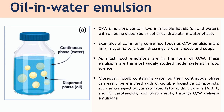Now let's see what is oil-in-water emulsion. Oil-in-water emulsions contain two immiscible liquids with oil being dispersed as spherical droplets in a water phase. Examples of commonly consumed foods as oil-in-water emulsions are milk, mayonnaise, cream, dressings, cream cheese, and soups.